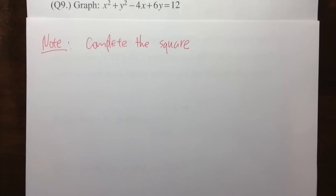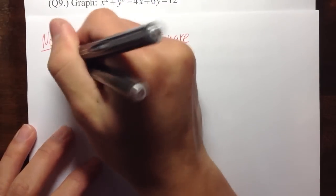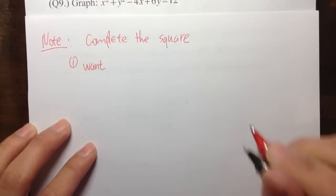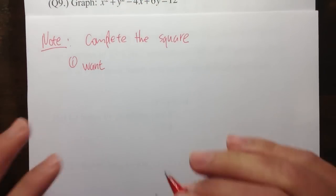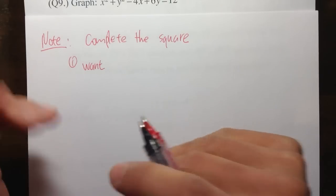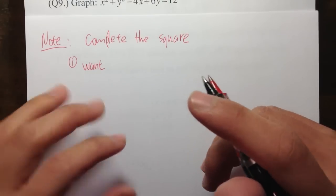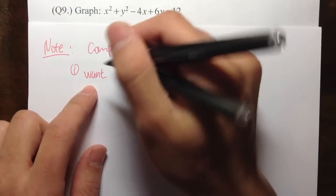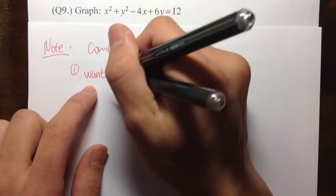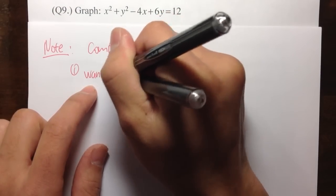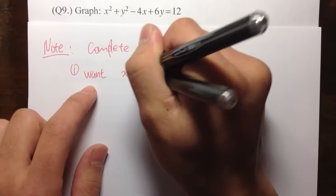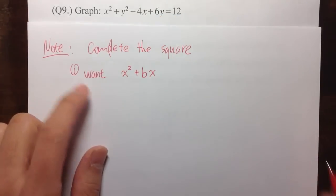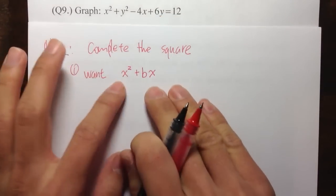Let me remind you what you need to do. First, we have to complete the square for both x and y. The technique for completing the square — you first want to see x squared plus some number b times x. You want to have this part first.